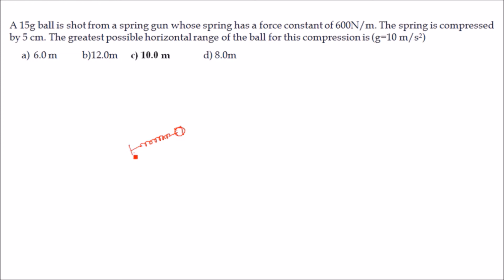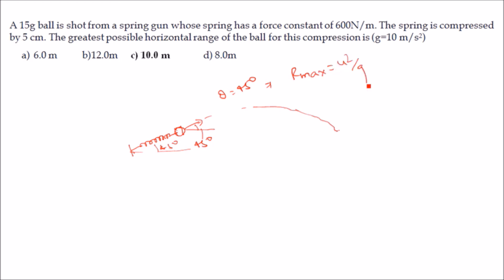This is the spring gun which throws the ball. For the greatest possible horizontal range, the angle of projection must be 45°. So the ball must be thrown at θ = 45°. When any object is thrown at 45°, the range is maximum and is given by R_max = u²/g.